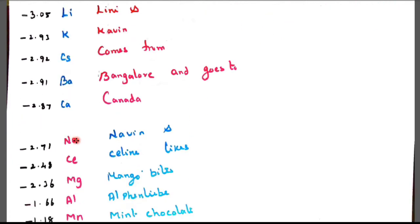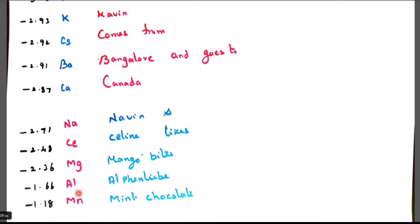Next up Sodium Na that is called Naveen, Cerium Selene, Magnesium Mango, Aluminum Alban Libby, and Manganese mint chocolate. So Naveen and Selene likes mango bites, Alban Libby and mint chocolate.